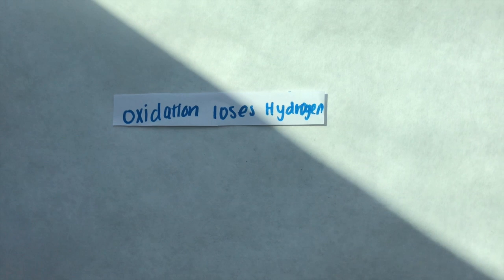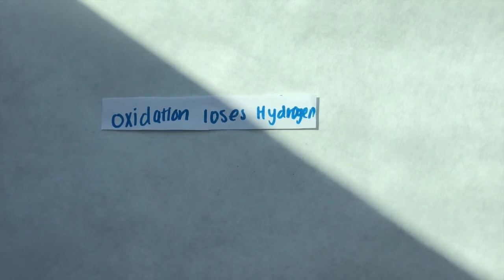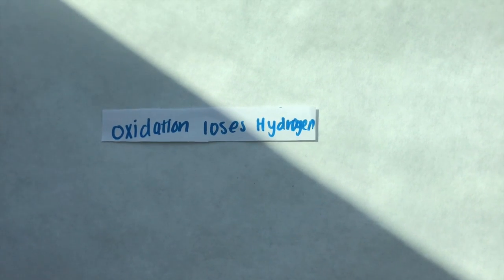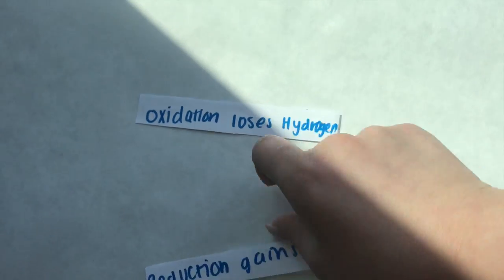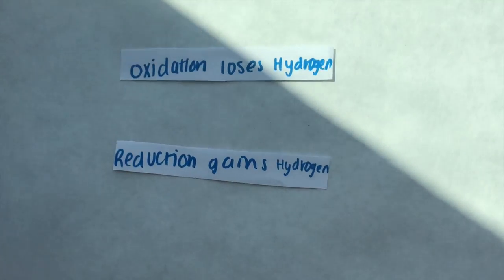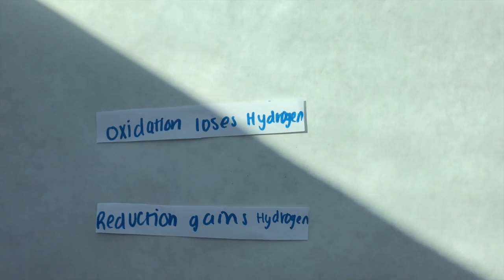Here's another trick. Oxidation can be seen by losing a hydrogen atom. We can also make other deductions based off this information. Reduction can be seen as gaining a hydrogen.